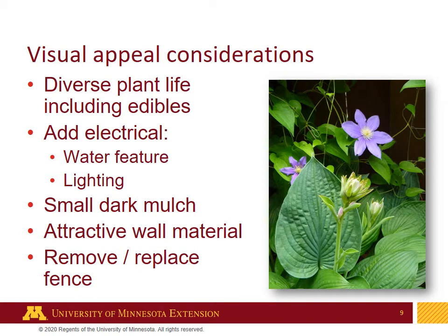The visual appeal is the more subjective, fun part. We want diverse plant life that includes edible plants — berries, vegetables, trailing vines, and herbs. We want to add some electrical capability for a water feature and lighting in the back area. We also want small dark mulch so the plants are the show, not the mulch, as well as attractive wall material and removing or replacing the fencing.